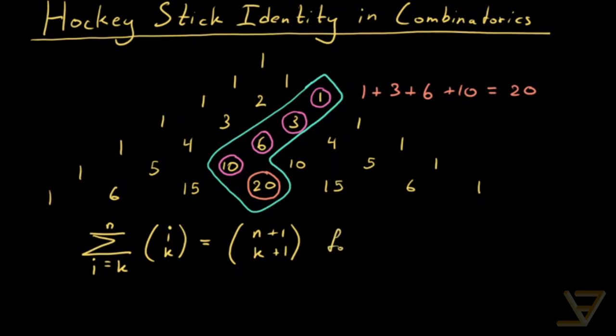And this is for n greater than or equal to k and k greater than or equal to zero. Both n and k are fixed integers.